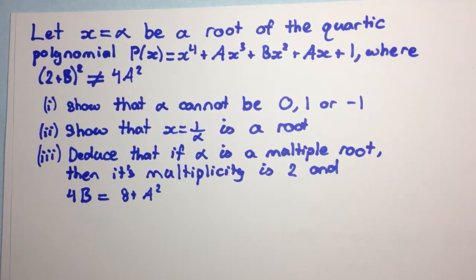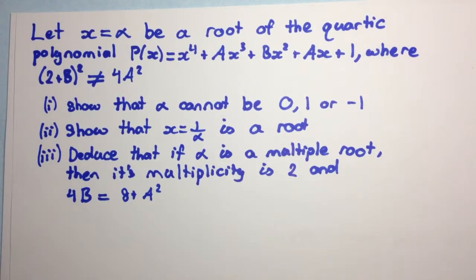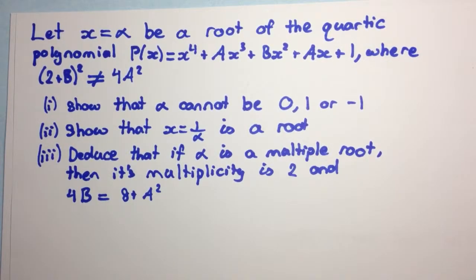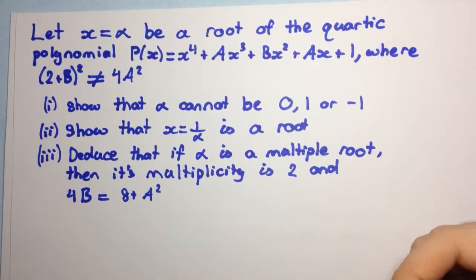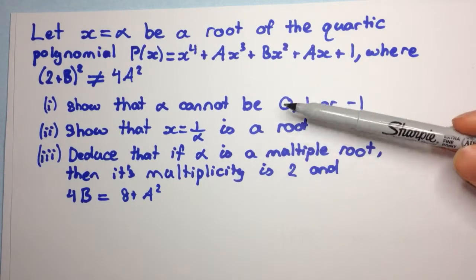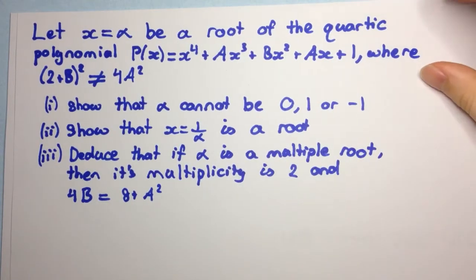Part 2: show that x equals 1 on alpha is a root. Part 3: deduce that if alpha is a multiple root, then its multiplicity is 2 and 4b equals 8 plus a squared. I'll probably do this question over two videos because it's quite long. In this video I'll do parts 1 and 2, and then I'll do part 3 in the next video.